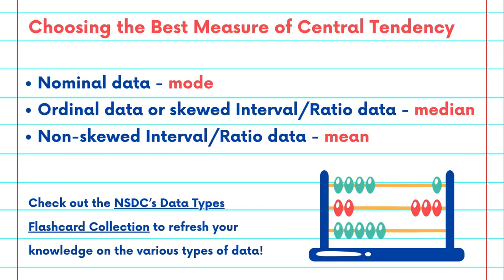Different types of data can be summarized by using different measures of central tendency. For nominal data, the mode is the best measure of central tendency. For ordinal data, or skewed interval and ratio data, the median should be used, while for non-skewed interval or ratio data, the mean is typically better.